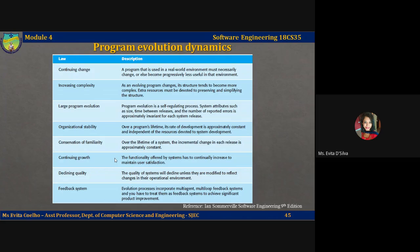Lehmann's fifth law, conservation of familiarity, is described as: over the lifetime of a system, the incremental change in each release is approximately constant. The fifth law is concerned with the change increments in each system release. Adding new functionality to a system inevitably introduces new system faults. The more functionality added in each release, the more faults there will be.